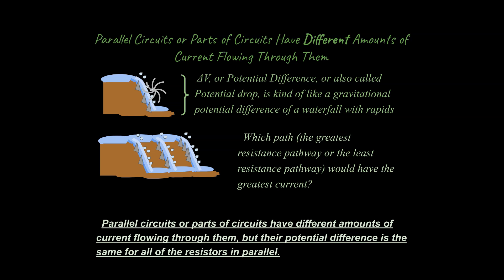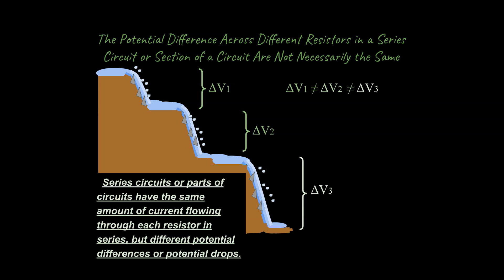That's an important point we'll return to throughout this unit. In a series system, the potential drops across each resistor don't have to be the same — maybe one is a three-foot drop, another four feet, another five feet. So potential drop in series is not necessarily equal across resistors. However, is anything the same? Yes — the current is the same throughout, because there's only one pathway. The charge carriers repel each other and all march forward at the same rate.